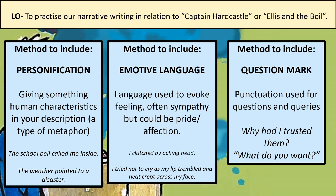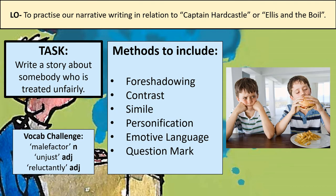Perhaps you could write about a group of friends where the leader is excluding one of the friends, making them feel like they don't belong. That would be a really good story about someone being treated unfairly. Before you start writing your stories, I'd like you to use the boxes in your workbook to plan your use of writer's methods for this writing challenge. You've got all the definitions in your workbook too. You can use some of the examples given with those definitions, but try to think of your own examples as well. Refer back to your spider diagram plan from earlier to help you plan the story.